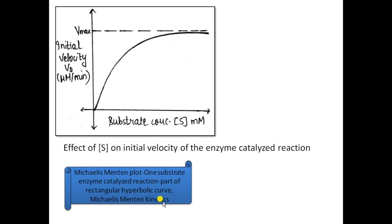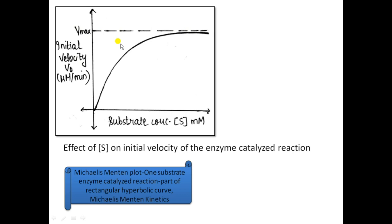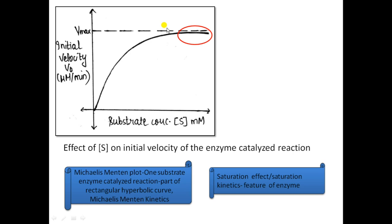If you change the enzyme you will get a different value of Vmax. Even for the same enzyme, if you change the concentration of enzyme you will get another Vmax value. Vmax is a characteristic of the enzyme and is fixed for a particular fixed concentration of the enzyme. This plateau is a result of the saturation effect or saturation kinetics, which is a characteristic feature of any enzyme.